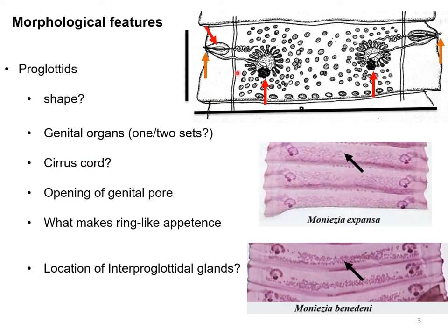The cirrus cord is the part of the male genital organ located within the cirrus sac. The cirrus cord is morphologically different from that of other cestode species, as it possesses minute spines on its surface. There is also a black structure called the vitelline gland and a flower-like structure called the ovary.